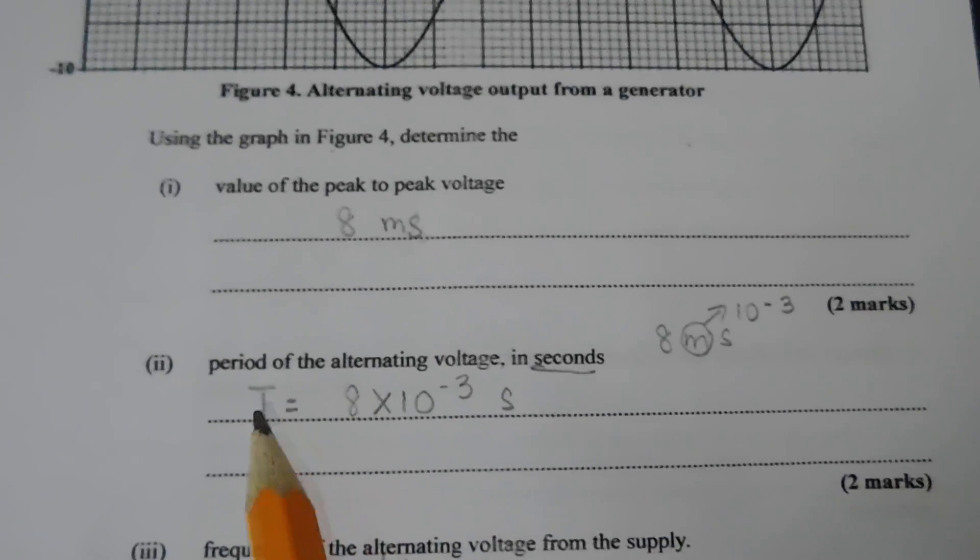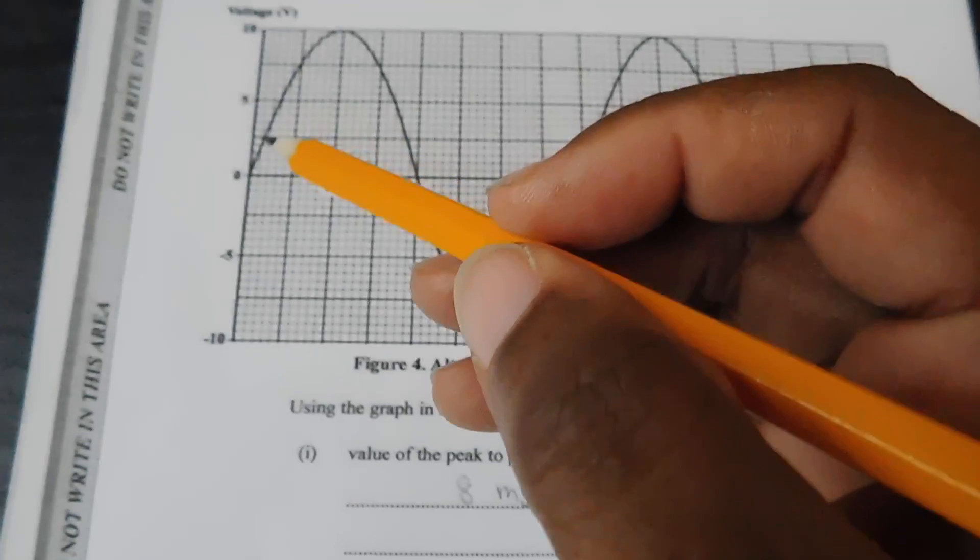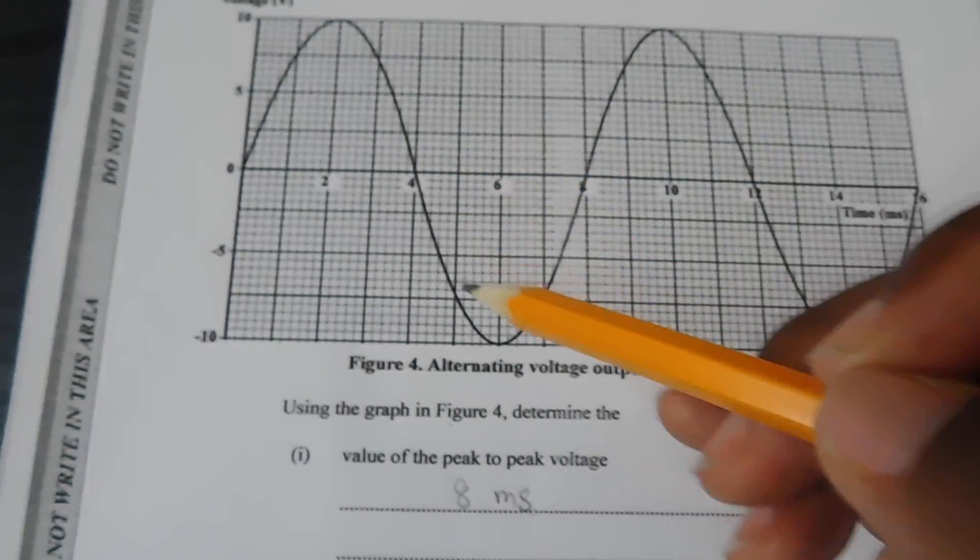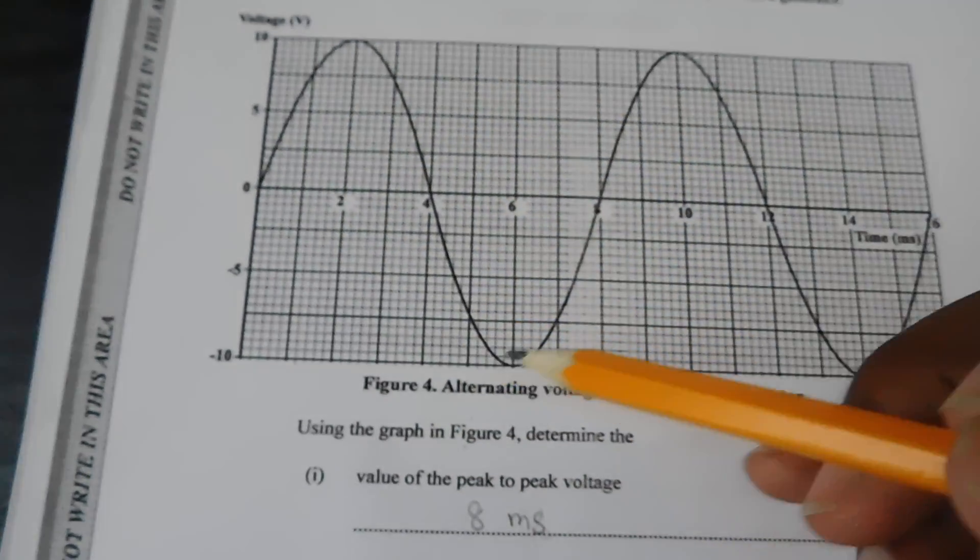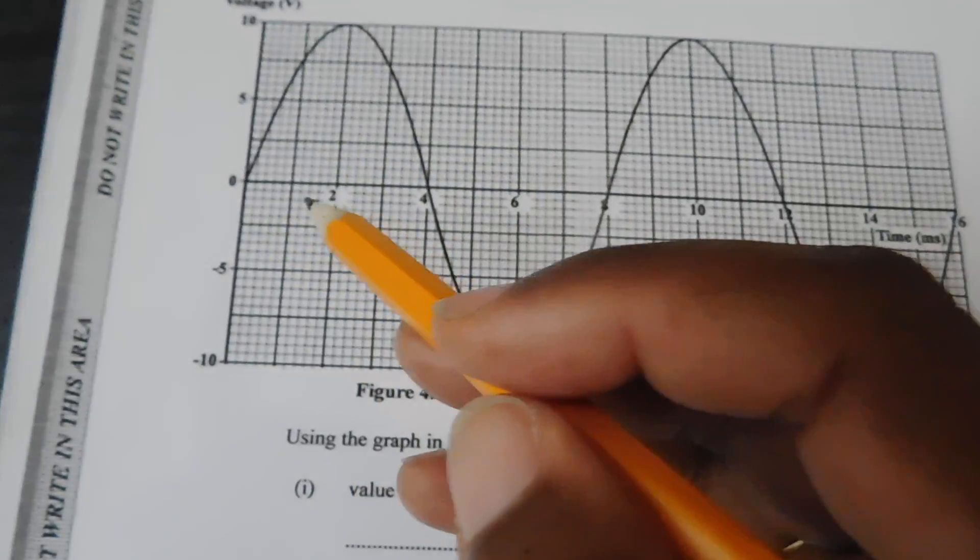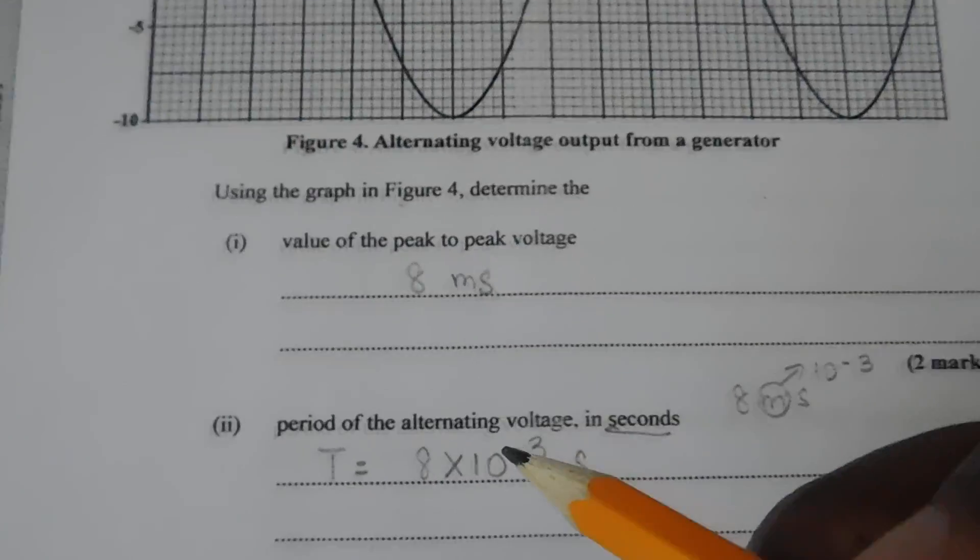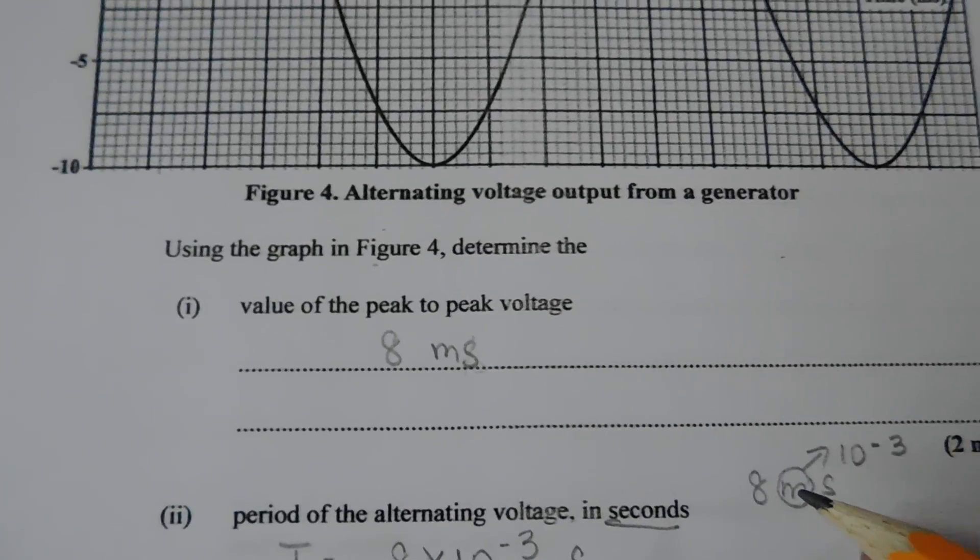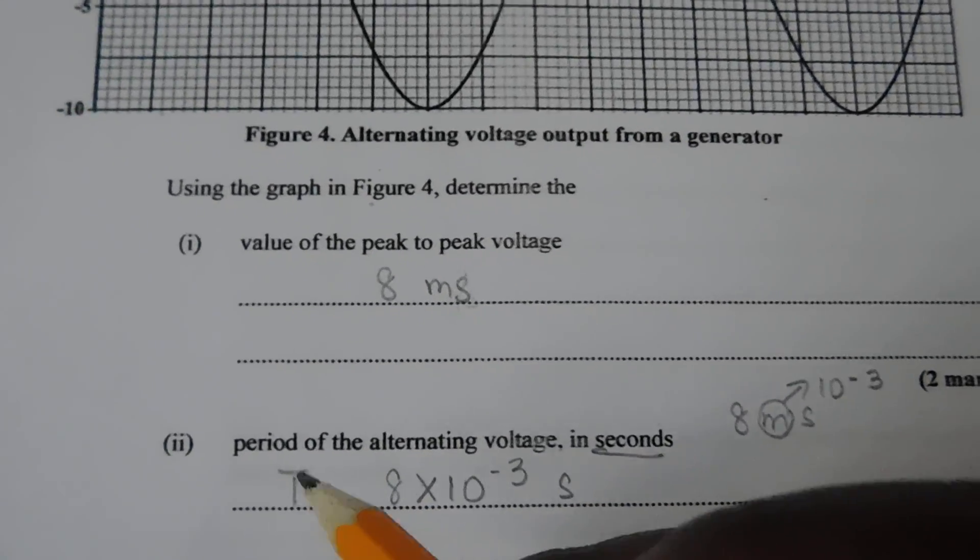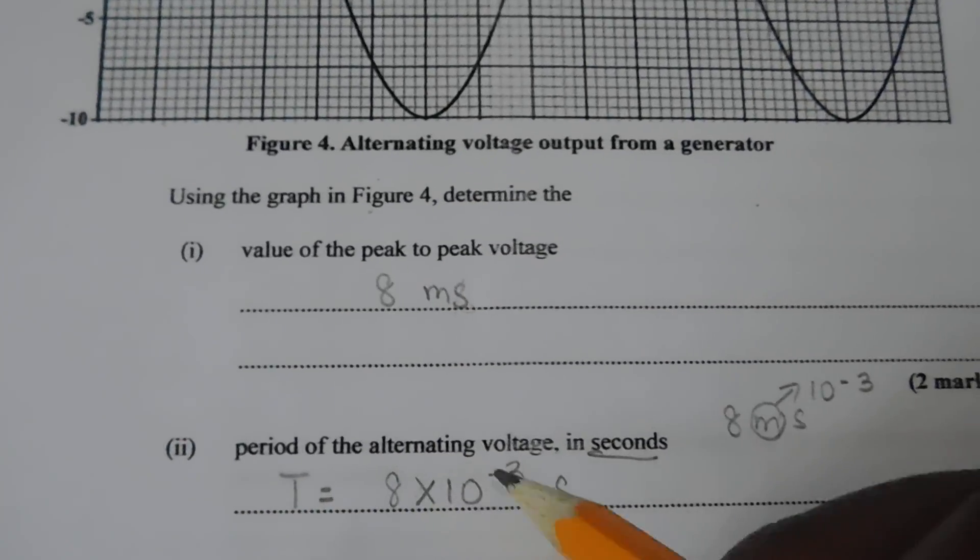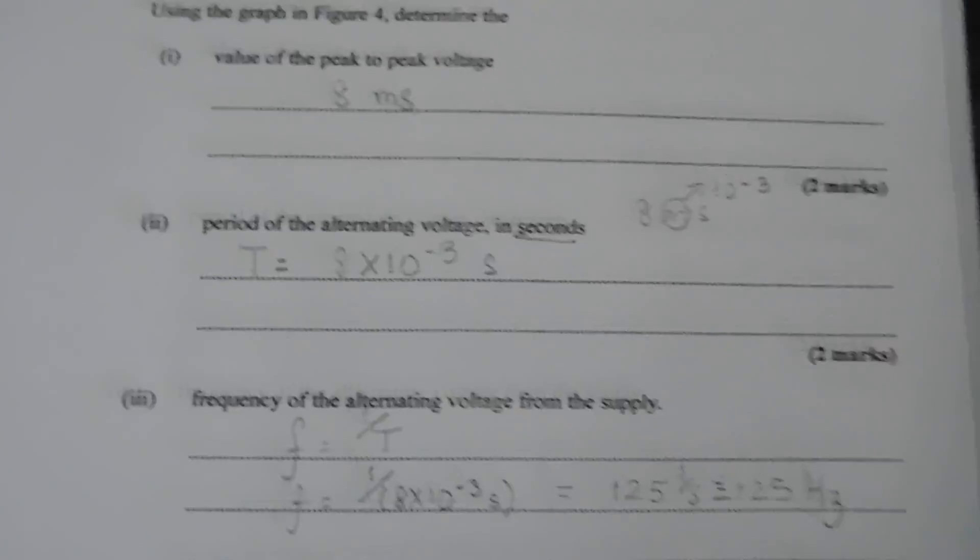So the period of the alternating voltage in seconds. So the period is the time taken for one full wave to oscillate. So I'm going from crest to trough. So the node of a crest to the node of a trough. And it goes from 0 to 8 milliseconds. And since it's milliseconds, to get rid of the milli, you know that milli is equal to 10 to the negative 3. So the period, which is denoted as a T, is equal to 8 times 10 to the negative 3 seconds. We got rid of the milli. And we just have seconds there.